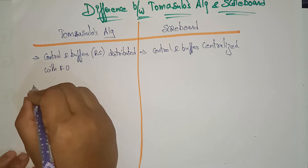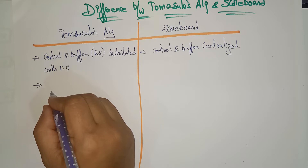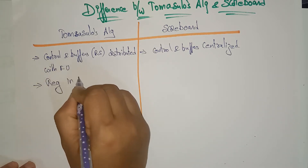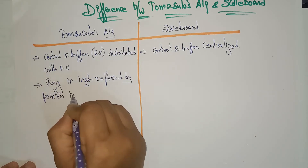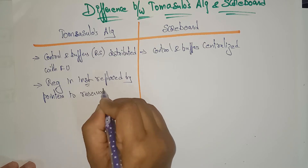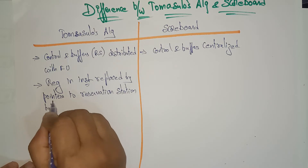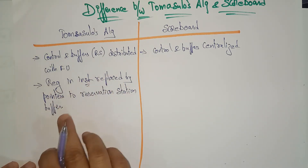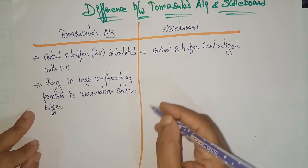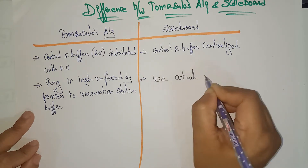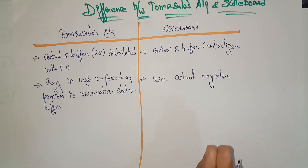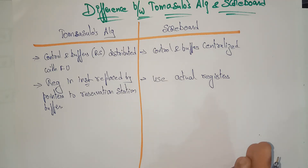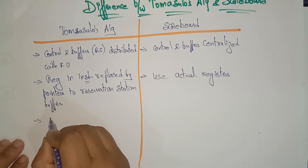In Tomasulo's algorithm, registers in instructions are replaced by pointers to the reservation station buffer — a renaming technique is used. In the scoreboard, it uses the actual registers only; it doesn't rename the registers. The source operands, destination operands, and Qj and Qk fields indicate whether a value is available, while Rj and Rk flag registers indicate whether the value is present.